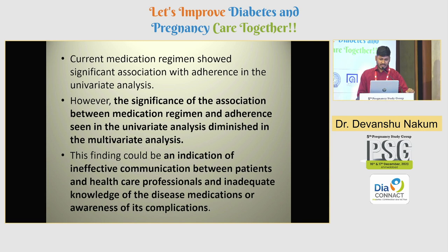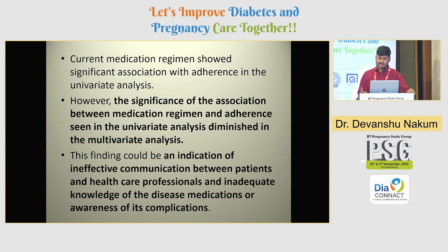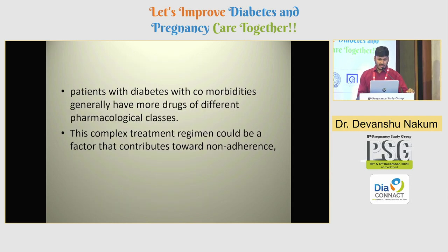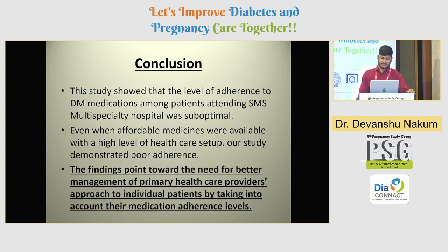In the discussion, the significance of the association between medication regimen and adherence seen in univariate analysis was diminished in the multivariate analysis, indicating ineffective communication between patients and healthcare professionals and inadequate knowledge of the disease, medications, or awareness of complications as possible causes. Patients with diabetes and comorbidities generally have more drugs from different pharmacological classes, and this complex treatment regimen could be a contributing factor toward non-adherence.